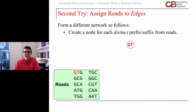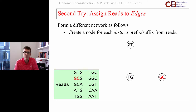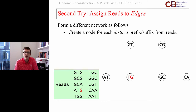Let's look at GTG — that's our first read. GT is its prefix and TG is its suffix. We go through and every time we see a new prefix or suffix, like CA, we form a node for it. AT is new, but TG is not new, so we don't form new nodes there. We just walk through the reads, and every time we see a new prefix or suffix we form a new node; if we've seen it already, we note that. Eventually we get to AA from CAA, and AAT has suffix AT which is already present. So we get eight nodes from this.